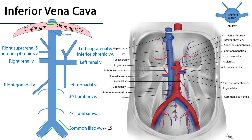There are various tributaries of the IVC, and these tributaries often mirror their abdominal aorta counterparts, with the exception of there being no commensurate branches to the celiac trunk, the SMA, or the IMA, because these three vessels feed the gut tube, and the gut tube is drained of blood by the hepatic portal vein.